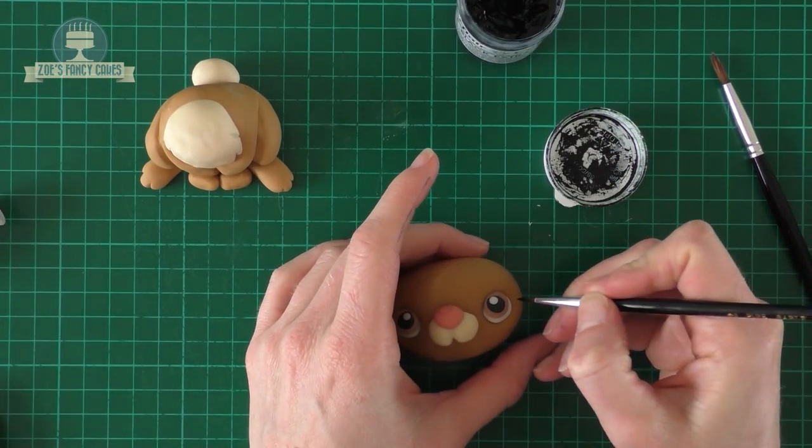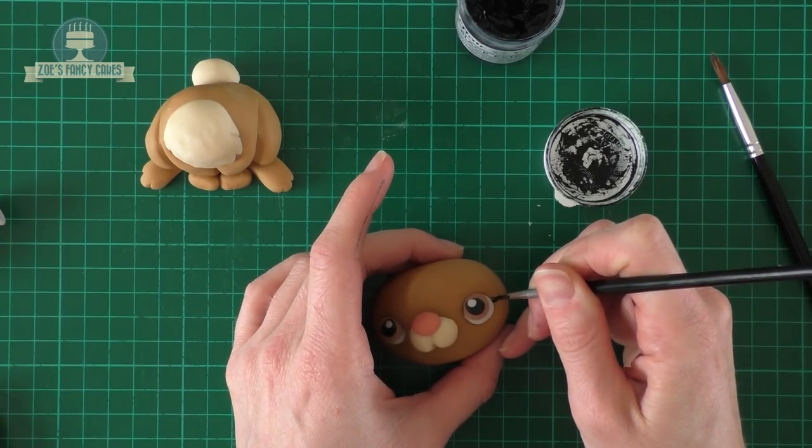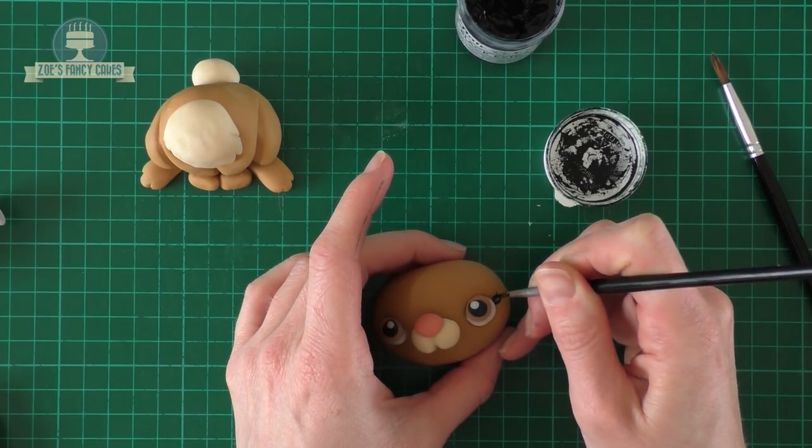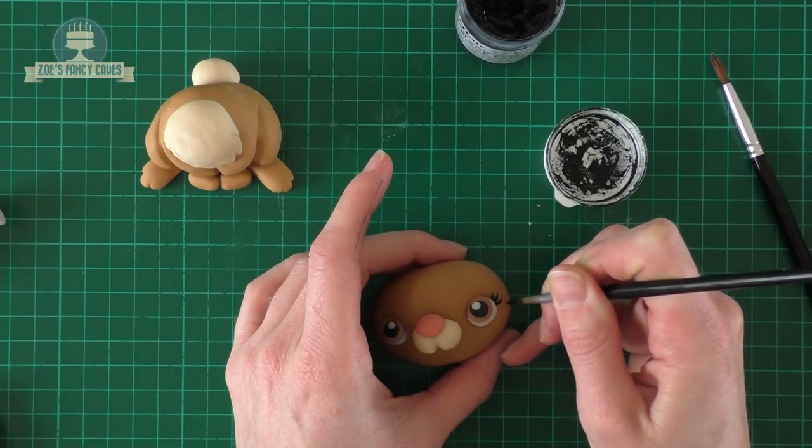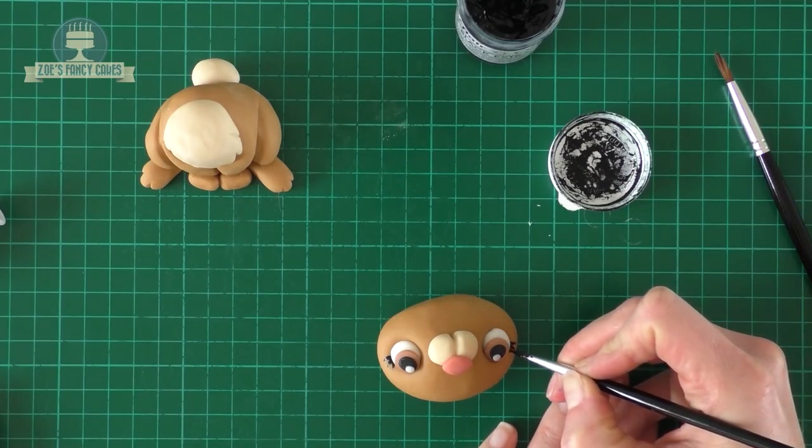I'm just going to use some food coloring to paint on some little eyelashes. Just make sure you've got a brush that goes to a nice thin point at the end. I just mix my food colorings with a little bit of water. You can use a clear alcohol if you like, but I always find the water just works okay when I'm painting in small pieces like this. Just three little flicks out from the outside edge. Do the same on the other eye.